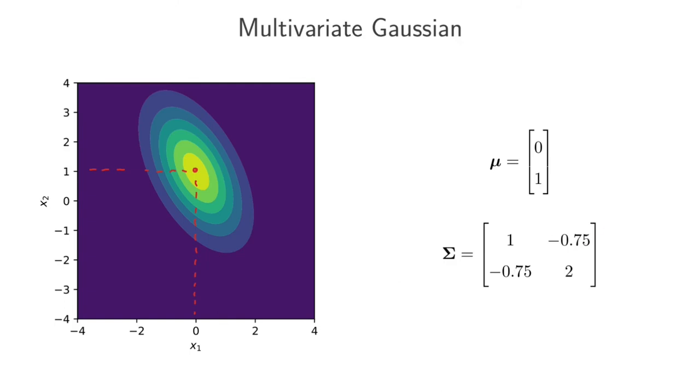And these numbers here are non-zero which tells us that x1 and x2 are correlated in some way. They tell us something about one another. If I know that x1 is around here then I know that x2 should be somewhere in this range here. And that is what causes the slant in this multivariate Gaussian.